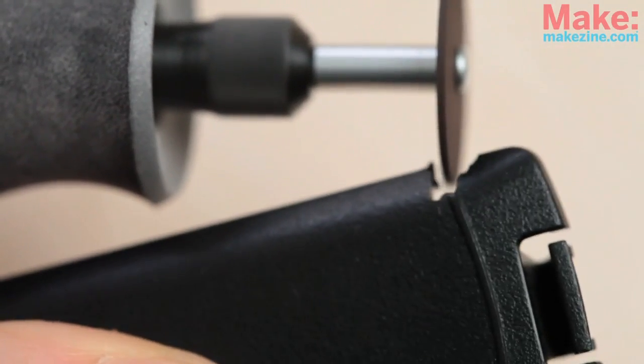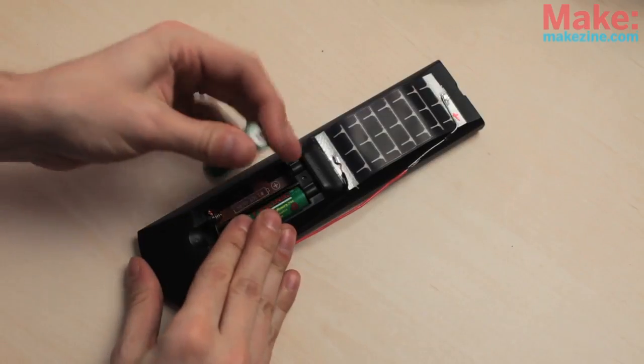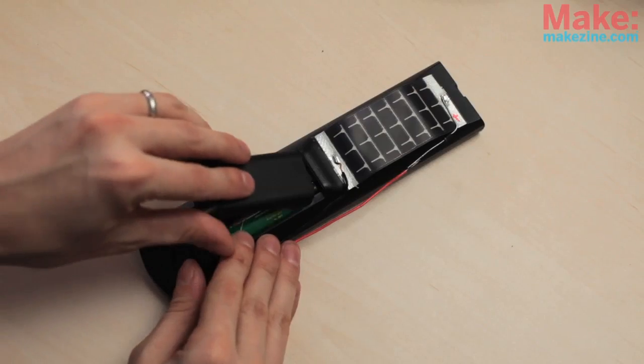If the rotary tool is too fast, you'll melt the plastic rather than just cutting it. After you put your batteries in and everything is secure, use the electrical tape to tape it all down.